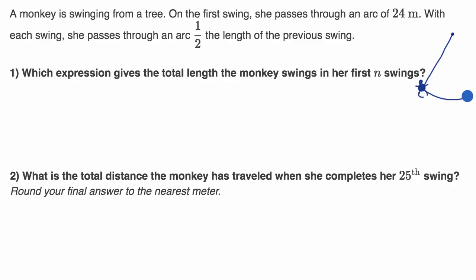And then on the second swing, she'd swing back at an arc half the length of the previous swing. So then she would come back and then it would be half the length. And so maybe swing back over here. And then on the next, so that would be 12.